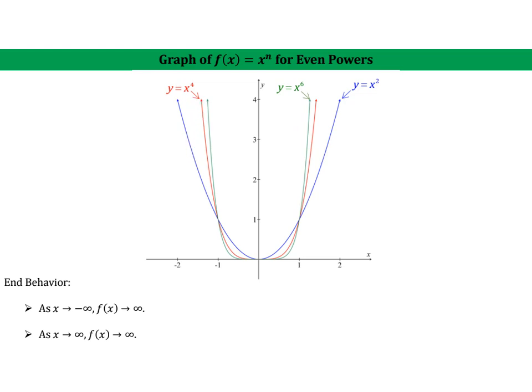What we will call the end behavior of the graph is as x approaches infinity or as x approaches negative infinity. So, as we move further and further to the left or to the right, you'll notice that our y values get larger and larger, so we go up.